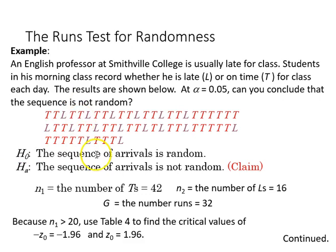The null is that the sequence of arrivals is random, so the lateness is just a random sort of thing, or the alternative is that there's something going on here causing the lateness.